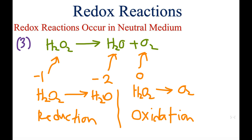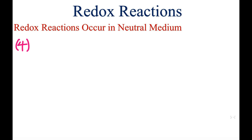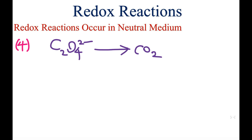In the fourth reaction, oxalate ion (C₂O₄²⁻) becomes carbon dioxide. This reaction happens in any medium — it does not need acidic or basic conditions. There are no color changes and carbon dioxide gas is eliminated.